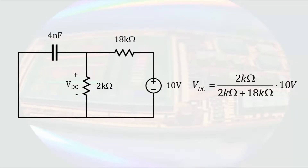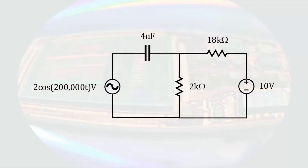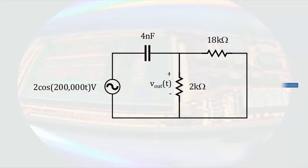Returning to the original circuit, in order to determine the effect of the sinusoidal source, we can turn off the 10 volt DC source. Since it is a voltage source that is turned off, we will get 0 volts, which is the same as a short circuit. Now we are left with a circuit that contains only a sinusoidal voltage source. We can easily analyze this circuit in the phasor domain.